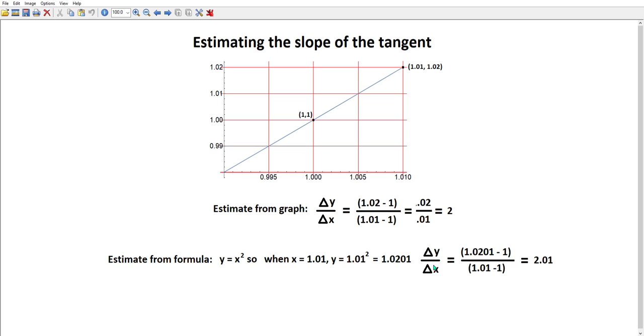Delta y over delta x is actually 1.0201 minus 1 over 1.01 minus 1, you calculate this ratio and you don't get 2. You get 2.01, which is a more accurate representation of the line you would get if you took this (1,1) and you took the point on our curve when x equals 1.01.